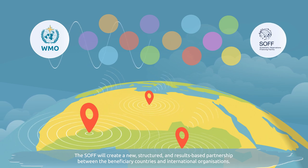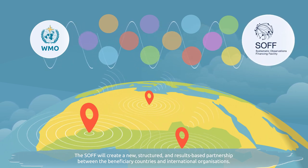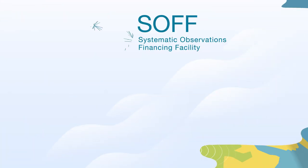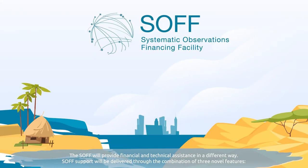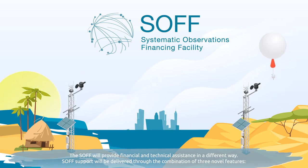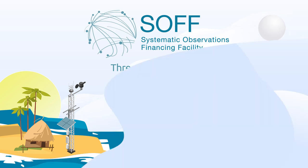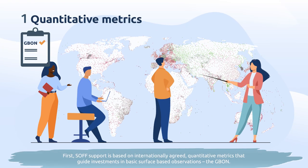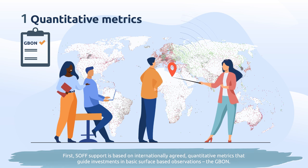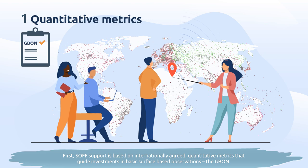The SOF will create a new, structured and results-based partnership between the beneficiary countries and international organizations. The SOF will provide financial and technical assistance in a different way. SOF support will be delivered through the combination of three novel features. First, SOF support is based on internationally agreed quantitative metrics that guide investments in basic surface-based observations, the GBON.